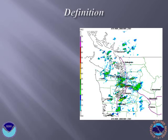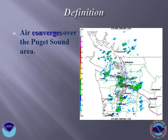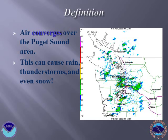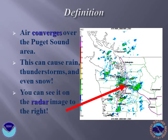A Convergence Zone occurs when air converges over the Puget Sound. The convergence can cause rain, thunderstorms, and even snow, as we'll see. You can see the Convergence Zone on the radar image to the right. The red arrow is pointing out an area of precipitation over Seattle detected by the weather radar. A radar image can tell you where it is raining in an area, with colors such as green, yellow, and red showing increasing intensities of rainfall or precipitation.